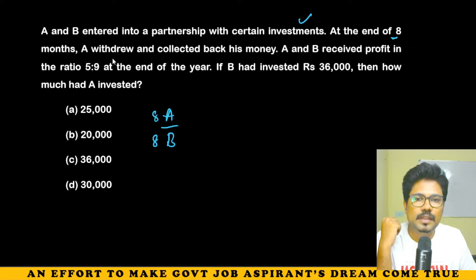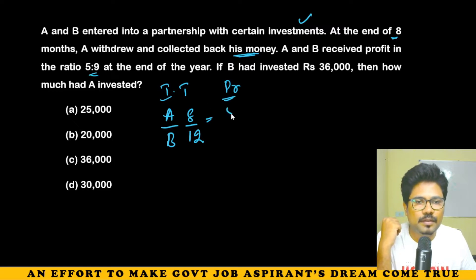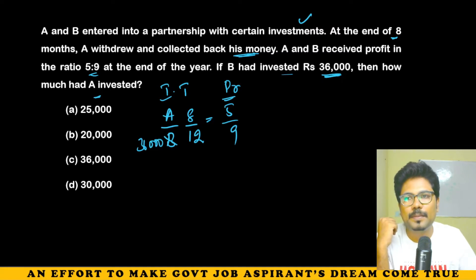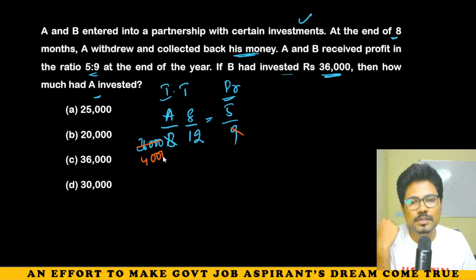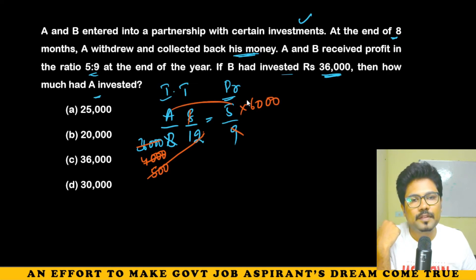Final question: A withdrew after 8 months and B stayed for 12 months. The profit ratio is 5 : 9. If B invested 36,000, find A's investment. Using profit = investment × time: A×8 : 36,000×12 = 5 : 9. Solving: A×8 = 5×36,000×12/9 = 5×48,000 = 240,000. A = 30,000. Answer is 30,000.